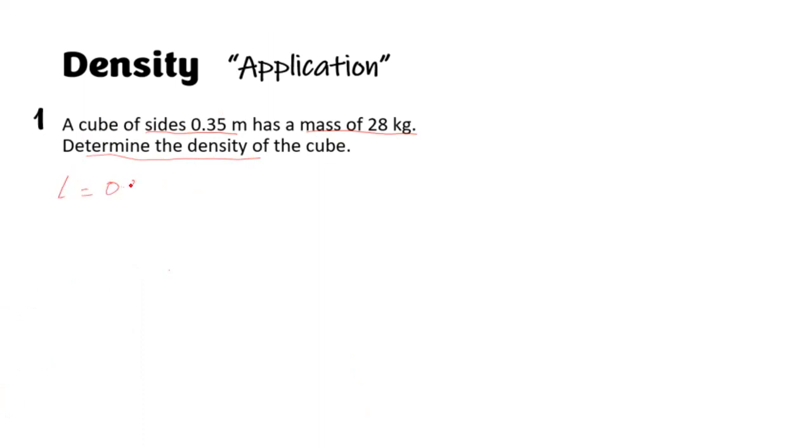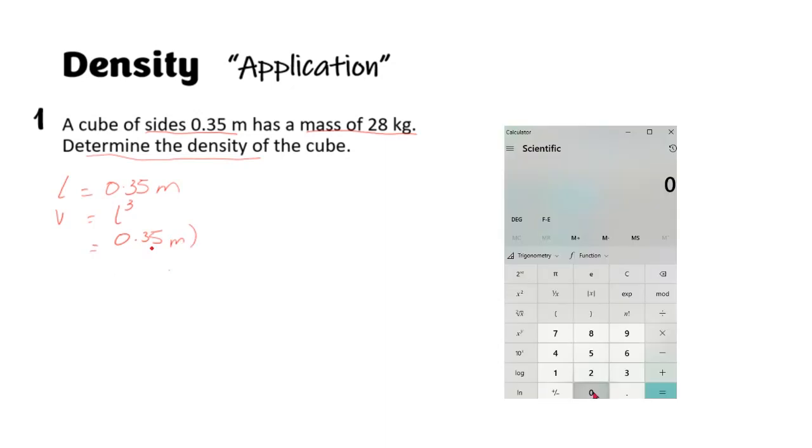So this is a cube. It says size is 0.35 meters. We know that the volume of a cube is equal to l³, or l × l × l. That's equal to 0.35 meters, all cubed.